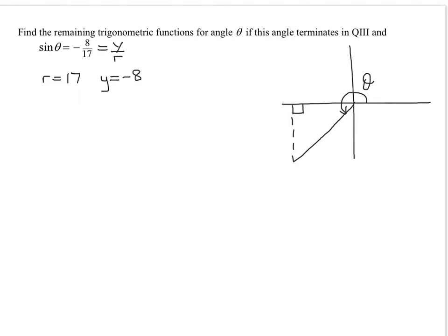And then we're going to end up with y equals negative 8. And so let's put those on the picture. Y equals negative 8. You can see in quadrant 3, y looks like it's negative. R is always positive in all these problems. So r is 17. And we're going to have to find the value of x, this distance here.